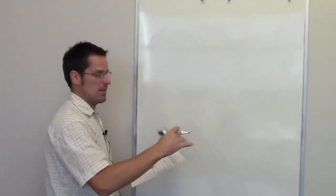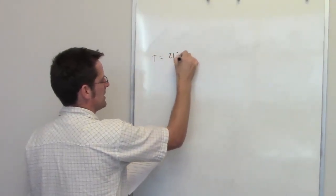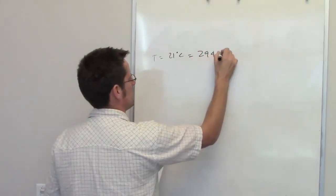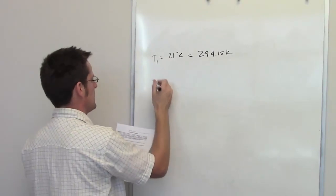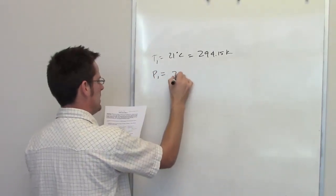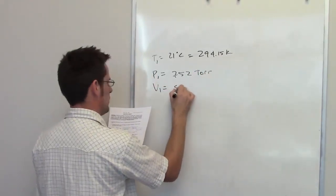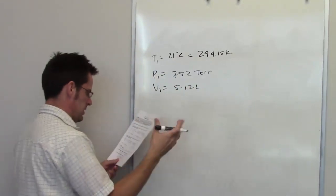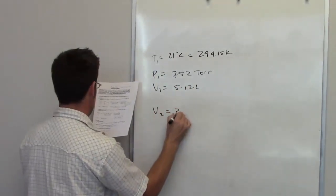In the second problem, I have the same gas whose temperature is sitting at 21 degrees Celsius, which we once again determined is 294.15 kelvins. So that's its initial temperature, or T1. It's sitting at a pressure, or P1, initial pressure, of 752 Tor. And its initial volume, V1, is equal to 5.12 liters. Once again, in this question, it's asking us to calculate the final volume. So V2 is the mystery.